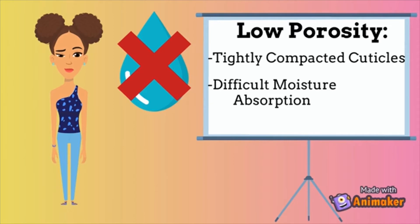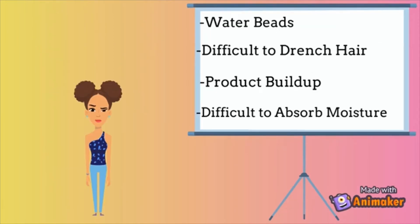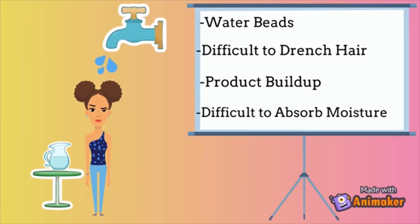Let's begin with low porosity hair. With this hair type, the cuticle is so tightly compacted that it makes it difficult for moisture to penetrate the hair shaft. There are a few ways to tell if you have low porosity hair: water beads up on the hair strands when it's wet, it takes a while for hair to become fully drenched, products sit on top of the hair for a long while before it dries, and it's difficult for the hair to absorb moisture — but when it does, it retains that moisture for a long time.